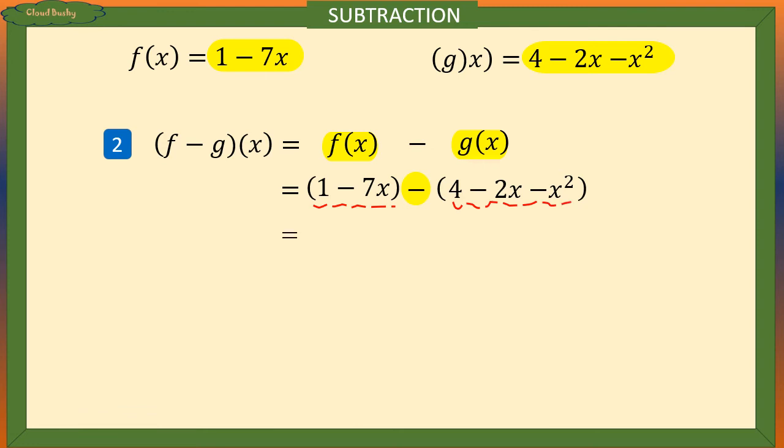Next we remove the brackets that will give us 1 minus 7x minus 4 plus 2x plus x squared. Now we collect like terms starting with x squared minus 7x plus 2x plus 1 minus 4.